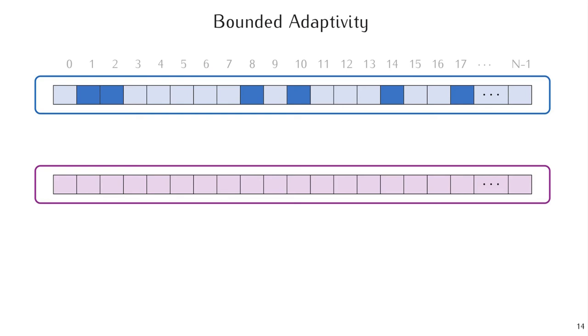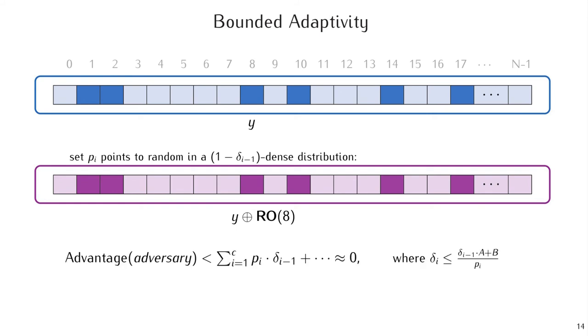When we fix these points for G by setting them to the image of H XOR RO(x), we are setting PI new points to uniformly random in a distribution that is not uniformly random. It is 1 minus some delta_{I-1} dense. And roughly speaking, each time we do this, this adds to the advantage of the adversary some term PI times delta_{I-1}, which is the distance of PI dense points from uniform.